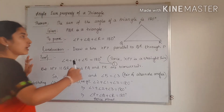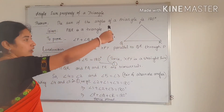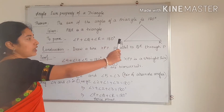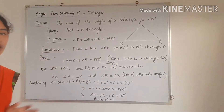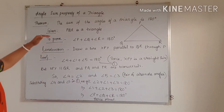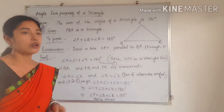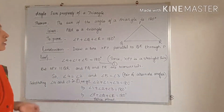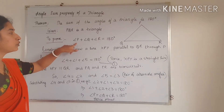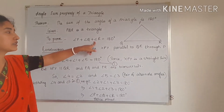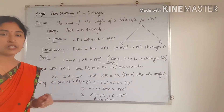First of all you have to draw a triangle. I have drawn a triangle and marked the vertices as P, Q, and R. Next, we have to write the given condition. What is given here? Only a triangle PQR is given. Next, what we have to prove? We have to prove that all three angles — angle P plus angle Q plus angle R — is equal to 180 degrees.